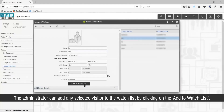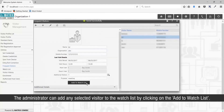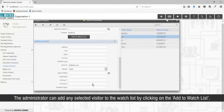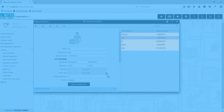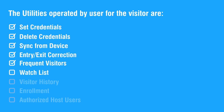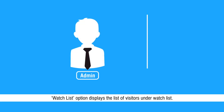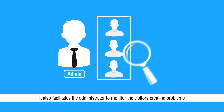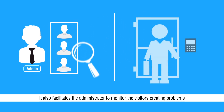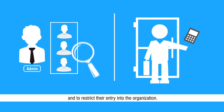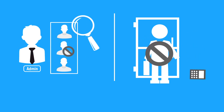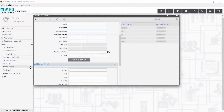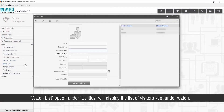The administrator can add any selected visitor to the Watchlist by clicking on the Add to Watchlist option. The Watchlist option displays the list of visitors under watchlist and facilitates the administrator to monitor visitors creating problems and restrict their entry into the organization. The Watchlist option under Utilities will display the list of visitors kept under watch.